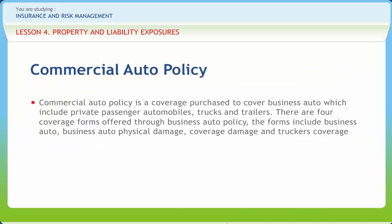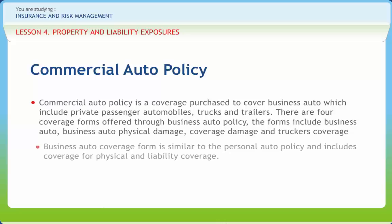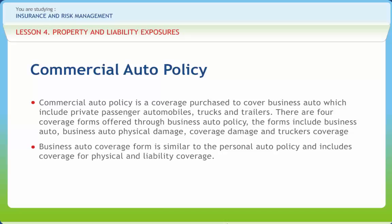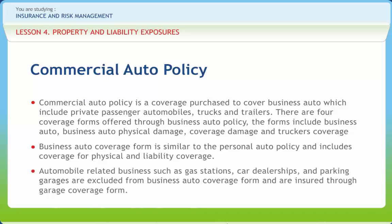Commercial auto policy is a coverage purchased to cover business auto which includes private passenger automobiles, trucks and trailers. There are four coverage forms offered through business auto policy. The forms include business auto, business auto physical damage, garage coverage and truckers coverage. Business auto coverage form is similar to the personal auto policy and includes coverage for physical and liability coverage. Automobile-related businesses such as gas stations, car dealerships and parking garages are excluded from business auto coverage form and are insured through garage coverage form.